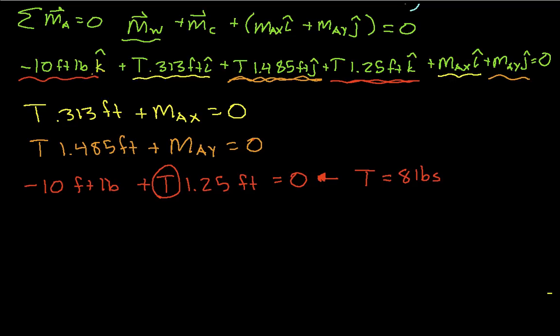That's useful. We now know what the tension in the cable that holds up the doggy door is. Now that we know what T is, we can plug T in here and have 8 pounds times 0.313 feet plus max is equal to 0. So we can solve this for max, and when we do that, we get max is equal to minus 2.5 foot-pounds.